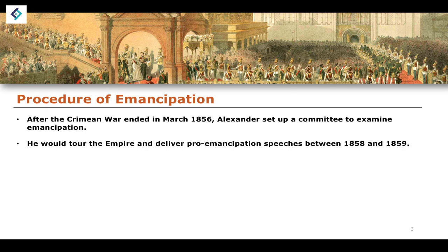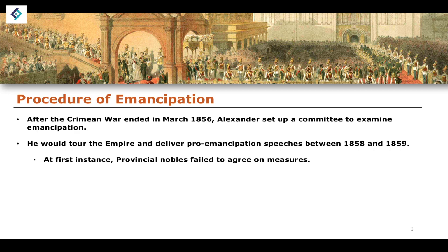He would tour the empire and deliver a number of pro-emancipation speeches between 1858 and 1859. He was the tsar of a very large, very populous empire, and the importance of that is that emancipation needed to be popular for it to have any meaningful impact. He needed to have the people on side — we don't want a revolution over emancipation. So there were a number of different things taking place between 1856 and 1859 on the road towards emancipation.